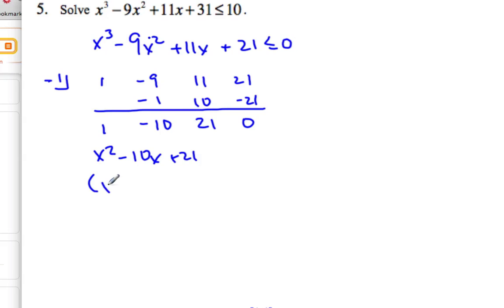And so this is x squared minus 10x plus 21. Factor this: x minus 3, x minus 7, and this factor here is x plus 1. And this has to be less than or equal to 0.